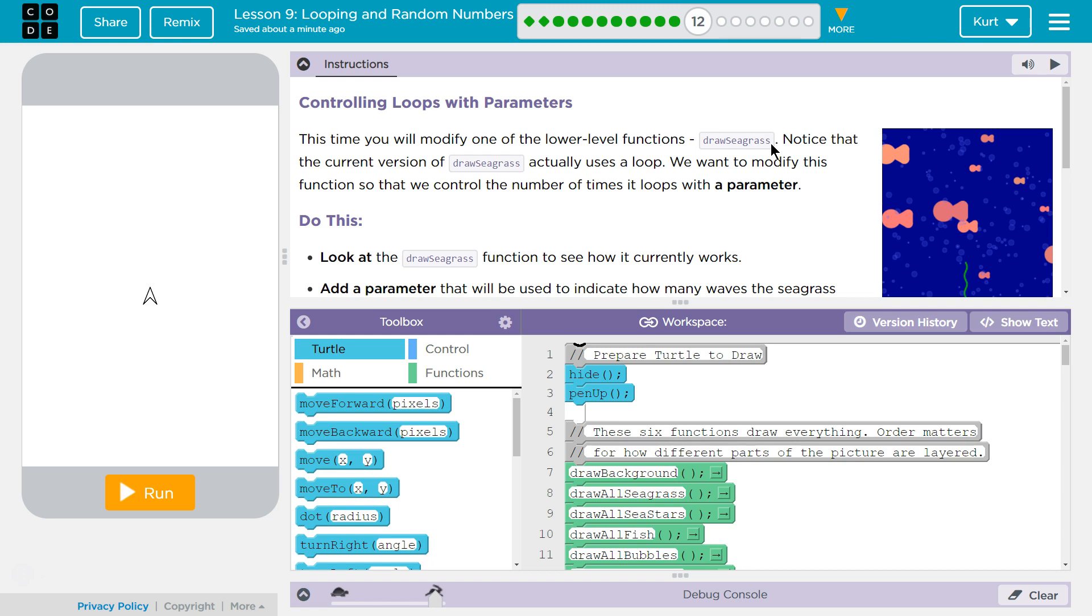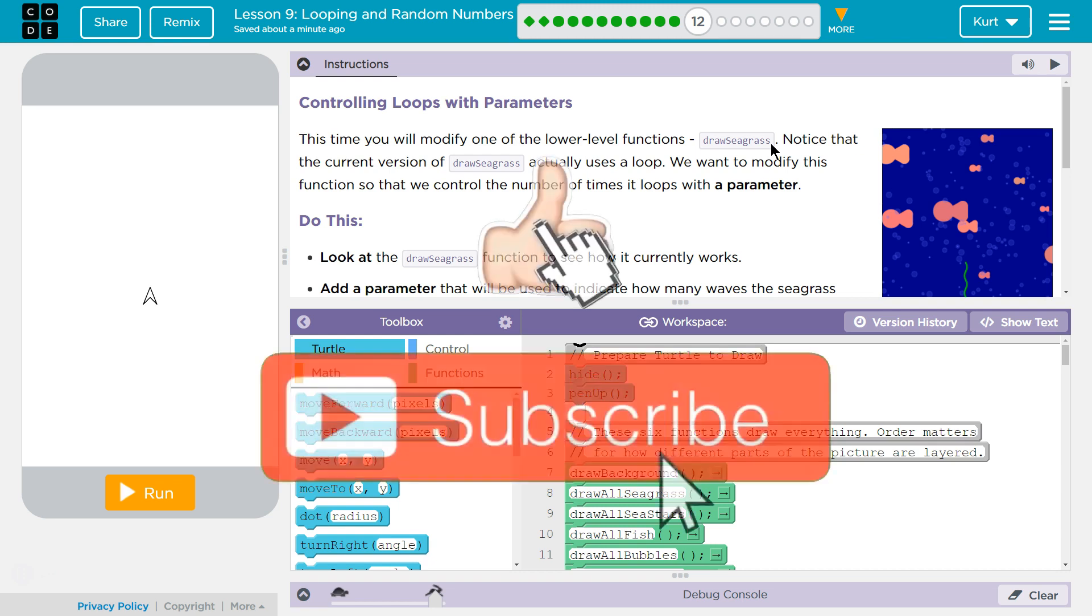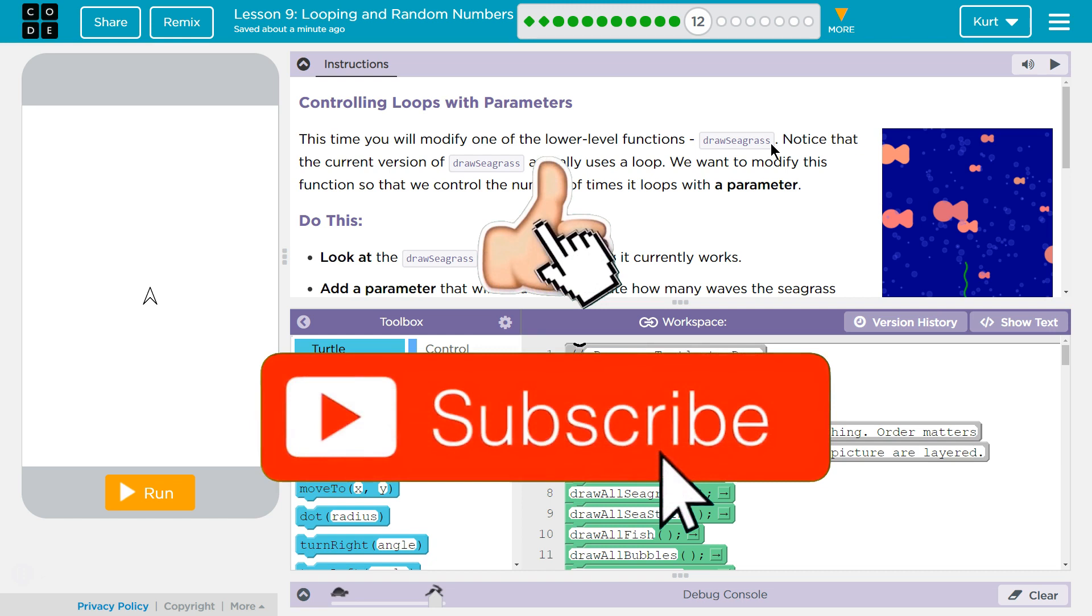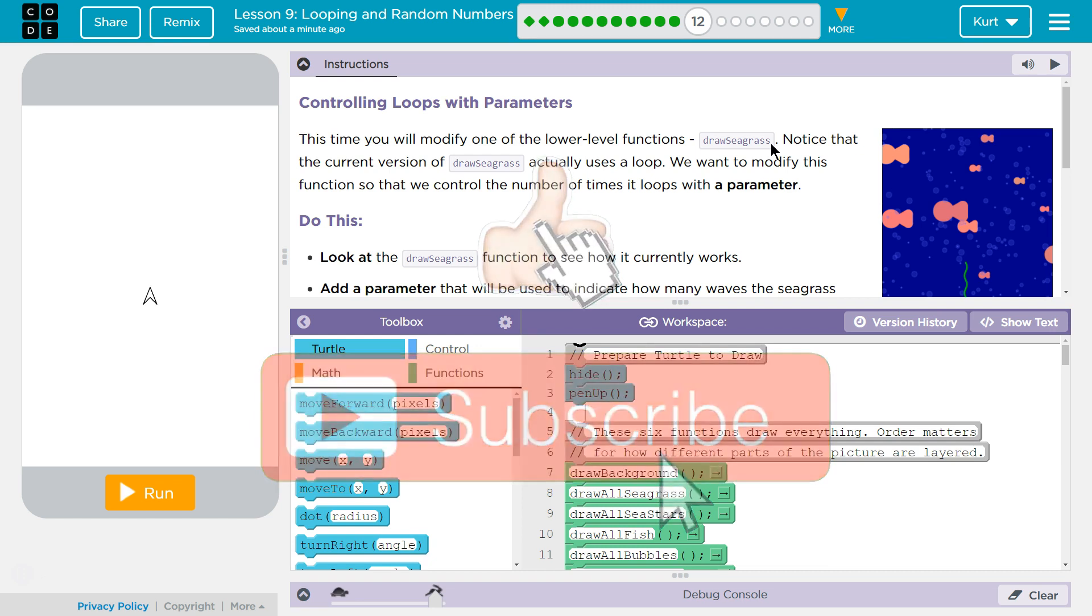Controlling Loops with Parameters. This time, you will modify one of the lower level functions, Draw Seagrass. Notice that the current version of Draw Seagrass actually uses a loop. We want to modify this function so that we control the number of times it loops with a parameter.